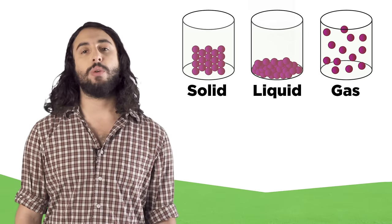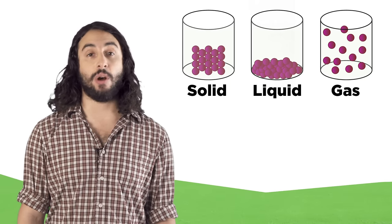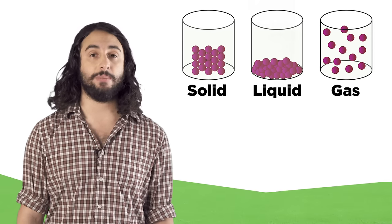Matter will frequently change forms, and describing these changes is at the heart of chemistry. A physical change is one in which the chemical composition of the substance is unchanged. When ice melts, water is going from the solid phase to the liquid phase. The way the water molecules are arranged changes, but they are still water molecules.